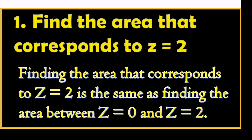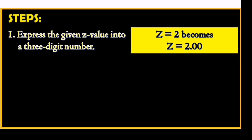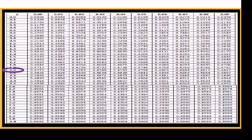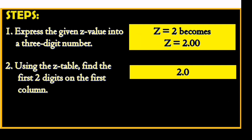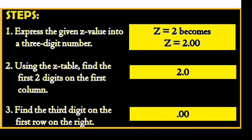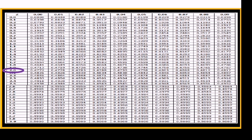Finding the area that corresponds to z equals 2 is the same as finding the area between z equals 0 and z equals 2. So we will follow the steps. Step 1: Express the given z-value into a three-digit number — z equals 2 becomes z equals 2.00. Step 2: Using the z-table, find the first two digits on the first column, so we look for 2.0. Step 3: Find the third digit on the first row on the right, so we look for 0.00.